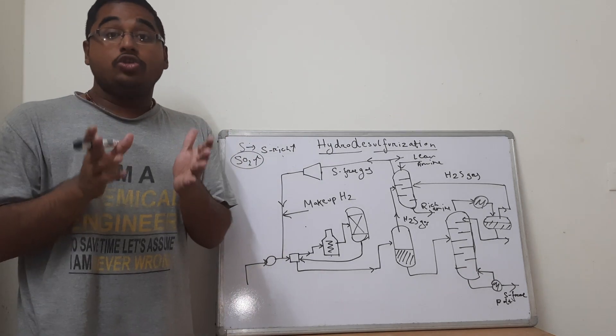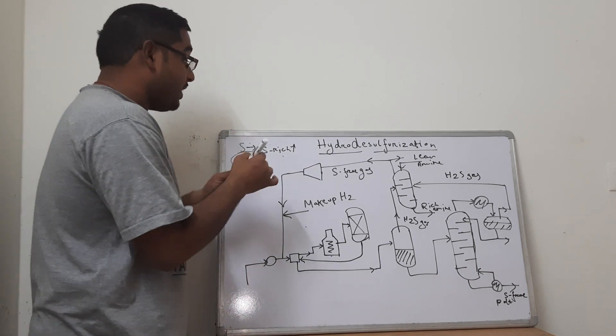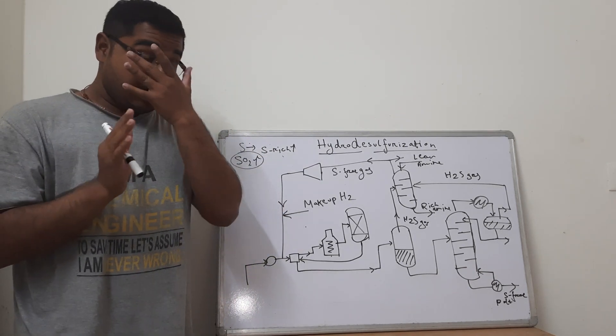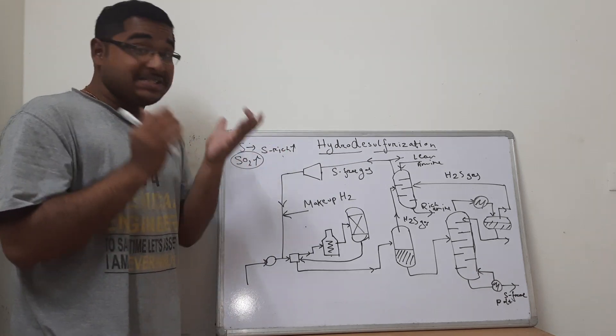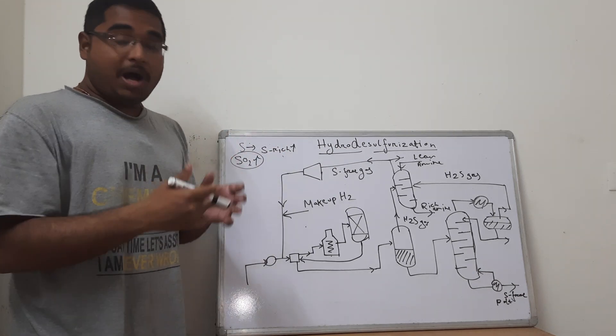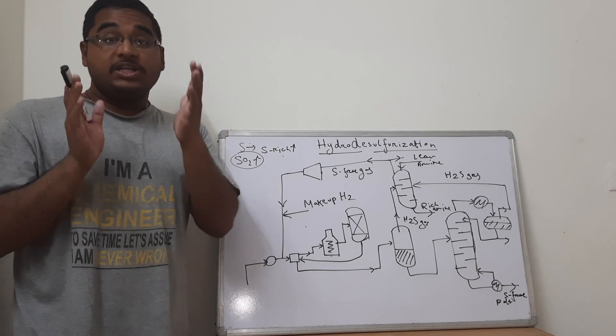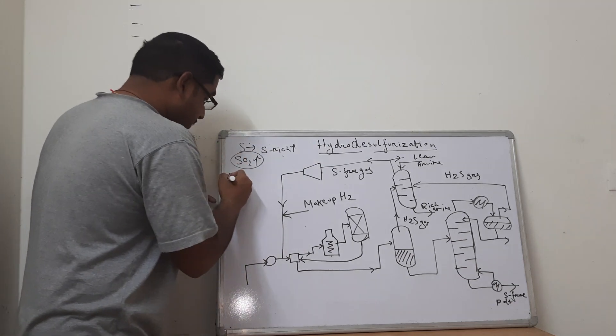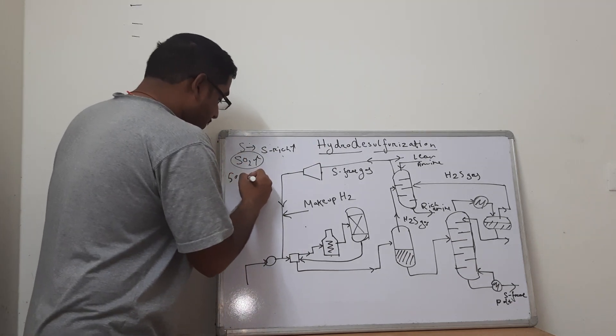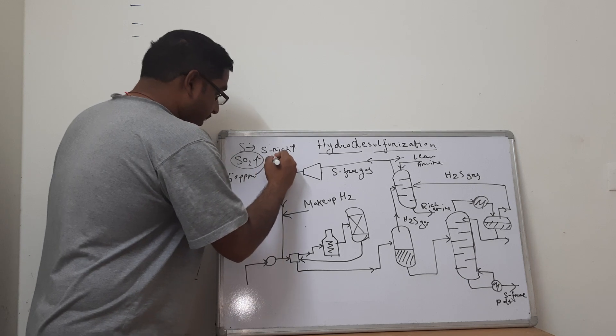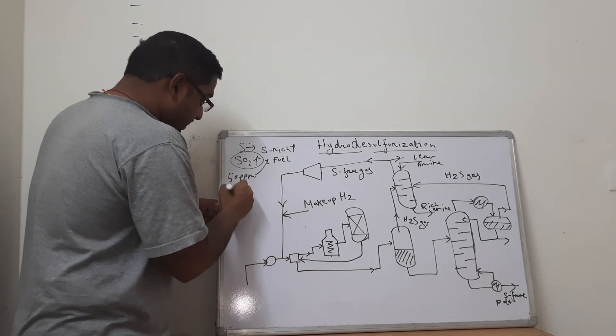So we need to stop the emissions that are already affecting our environment so much. And that's why recently we see the launch of BS6 engines and that's why specially fuel designed for BS6 engines are coming in the market. Earlier the BS4 engine allowed about 50 ppm of sulfur in the fuel.